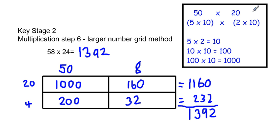If you refer to the box in the top right hand corner, you'll see we've turned 50 into 5 times 10 and 20 into 2 times 10. We then times out each part of the brackets. So we start by doing 5 multiplied by 2, which is 10.